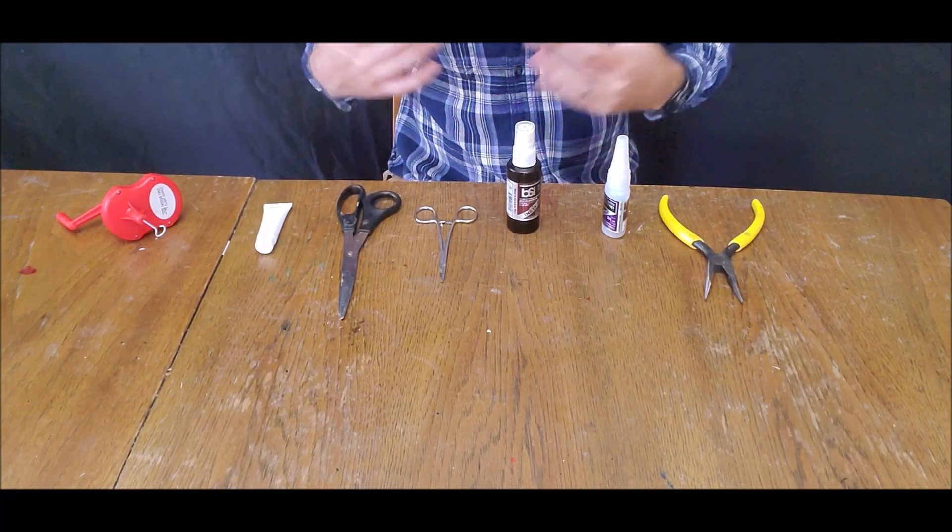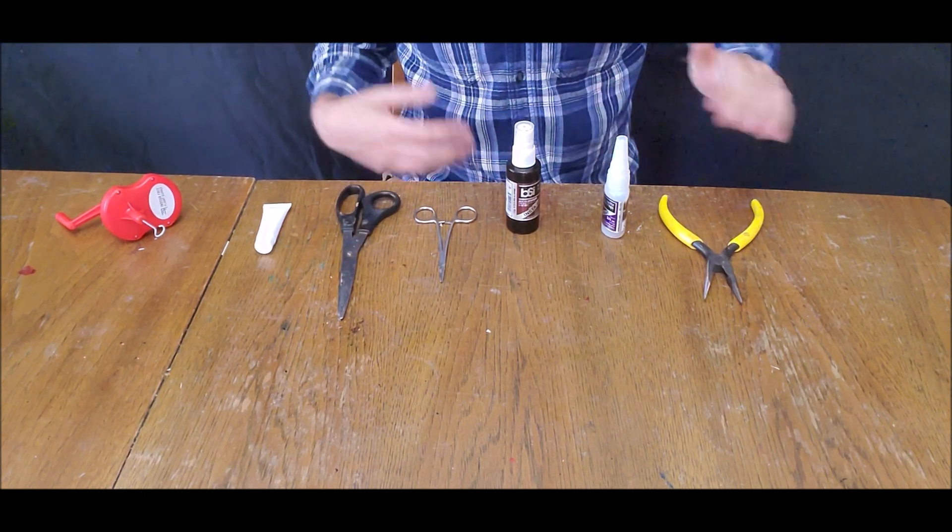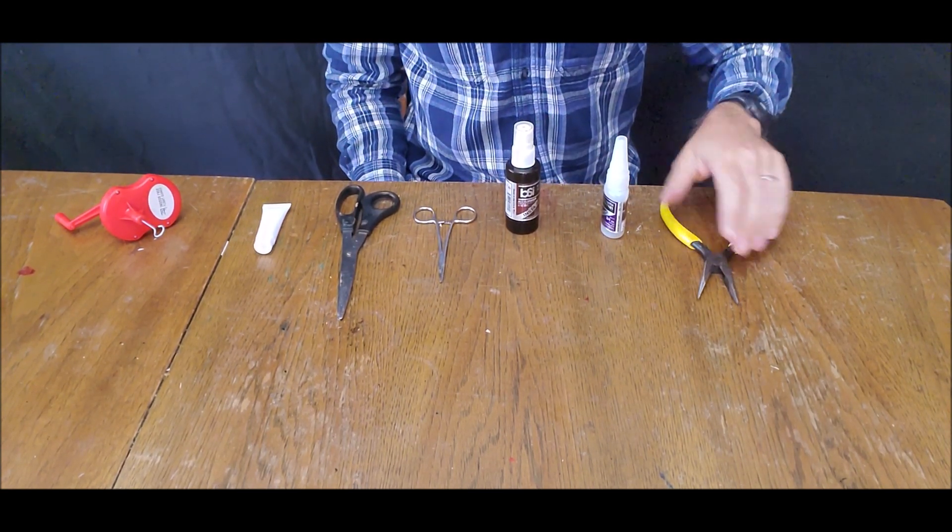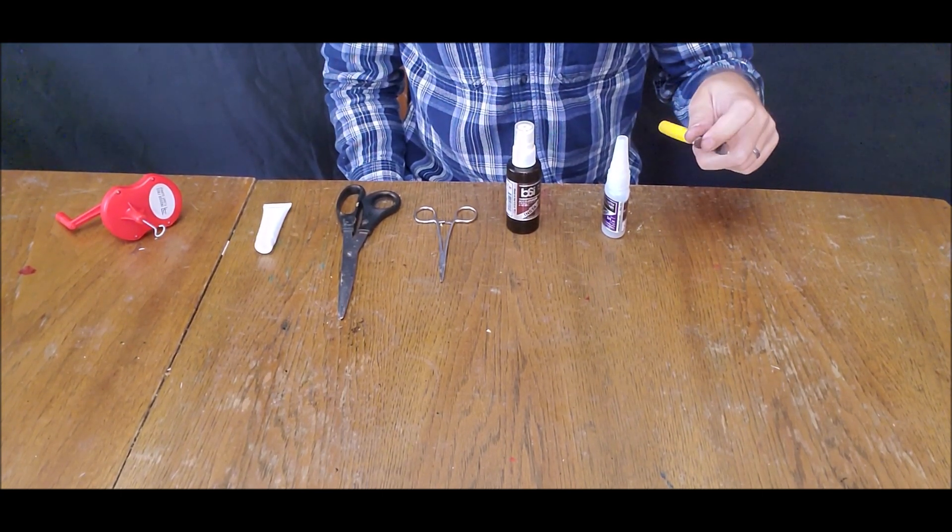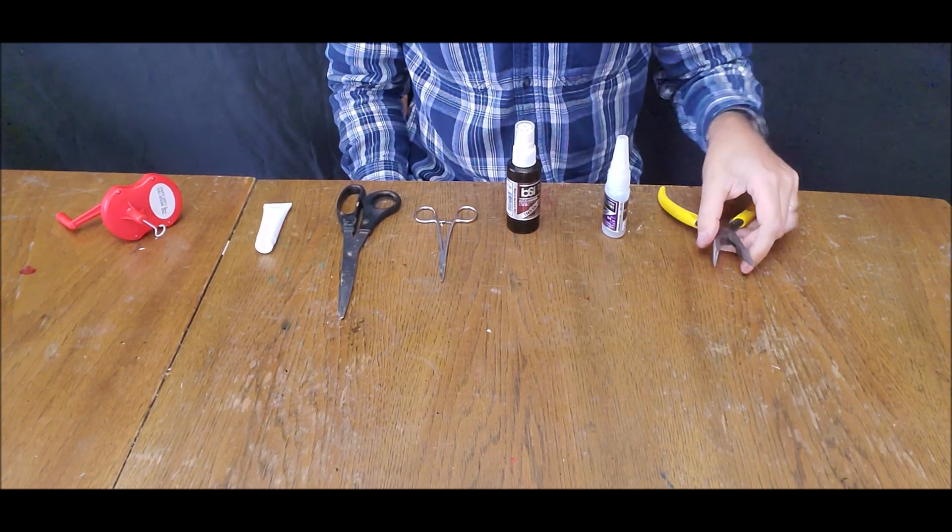You will need the following tools and materials to build out your twister. You'll need a pair of needle nose pliers. These need to be in good condition with texturing that allows you to grip the propeller shaft.